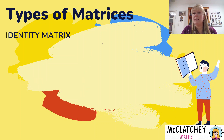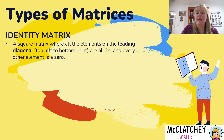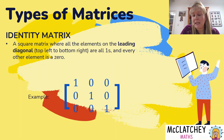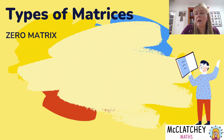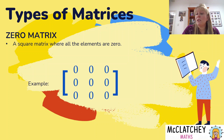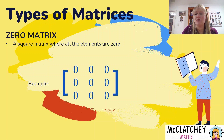We've also got something special called an identity matrix, and we're going to look more at these in future videos. It's a square matrix where all of the elements on the leading diagonal — from your top left element all the way down to the bottom right element — are all ones, and every other element in the matrix is a zero. We've also got a zero matrix, which is a square matrix where every element is a zero. A square matrix is one where the number of rows is equal to the number of columns.